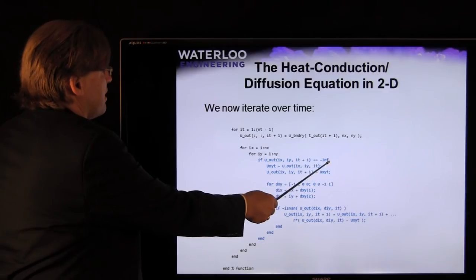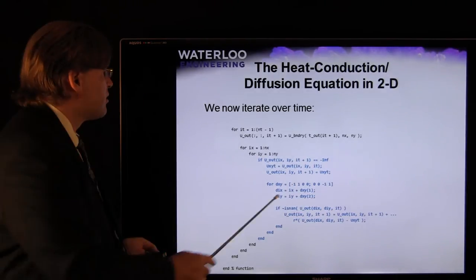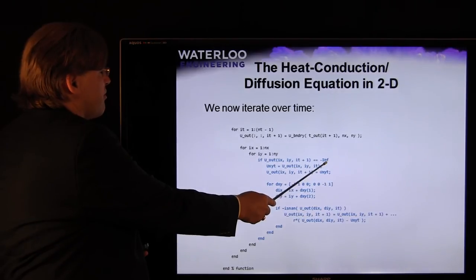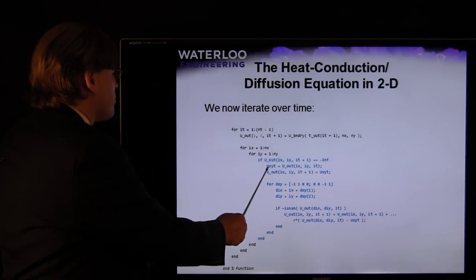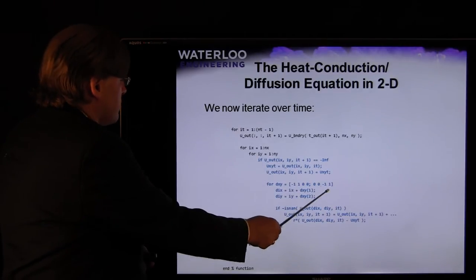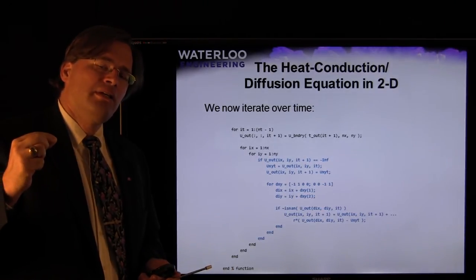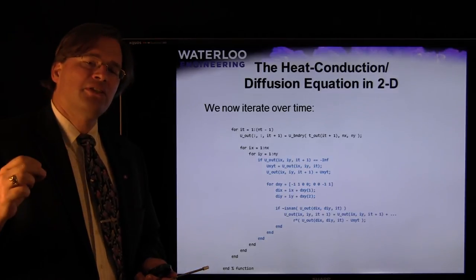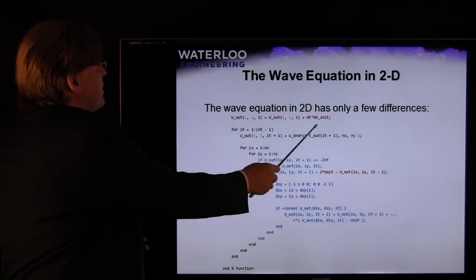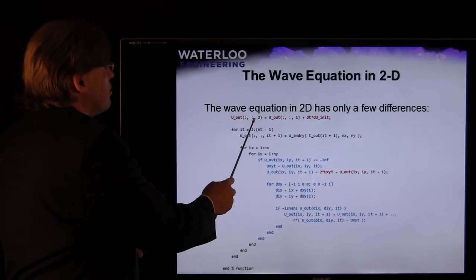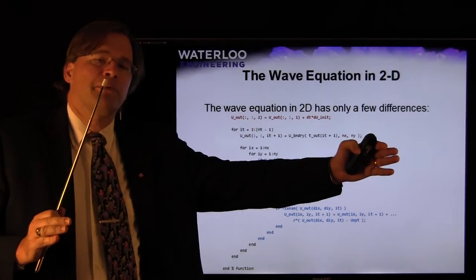Our first approximation for the diffusion equation is that the state will not change at the next time step. Then we check for boundary conditions — insulated or Dirichlet — to determine whether there is an effect. If a value is unknown (negative infinity), we approximate it by checking and updating based on each of the four adjacent points, determining whether they are Dirichlet or insulated and updating as appropriate. For the wave equation, we start at time 2, which is time 1 plus delta_t times the rate of change, then carry on for indices 3, 4, 5 up to n_t.